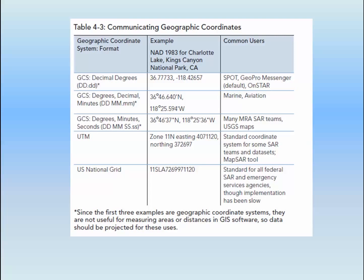One last example is the US National Grid, or USNG. This is a projected coordinate system and uses zones and meters to represent the XY location on a grid. One advantage is that the coordinates are given as a single string. So, as with our example, you'd say 11 SLA 769971120. You might also want to read the letters using the phonetic alphabet — SLA is Sierra Lima Alpha. In USNG, the coordinates are X and Y combined in a paired set, along with a zone location, as a single string. This is a fairly new system being adopted nationwide for emergency responders in SAR and fire. However, it's been very slow in adoption, and at the moment USGS maps don't include it. For a fuller explanation, be sure to read the USNG section in Chapter 4.